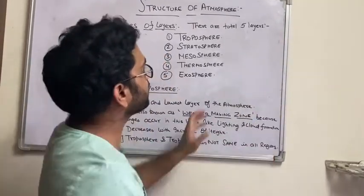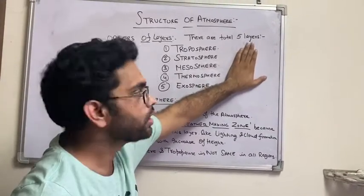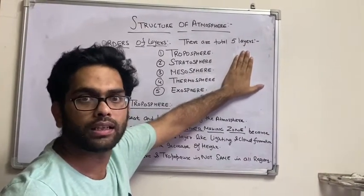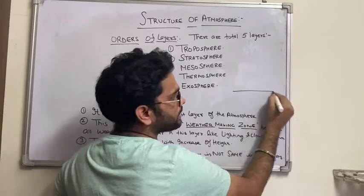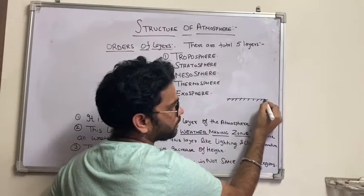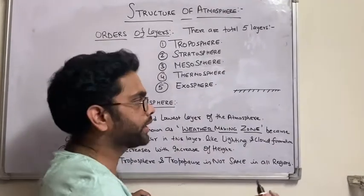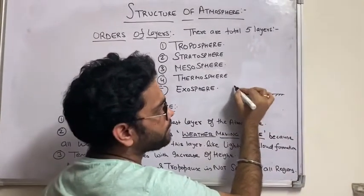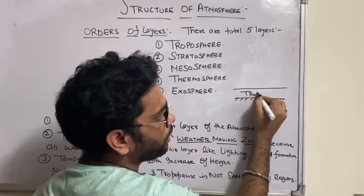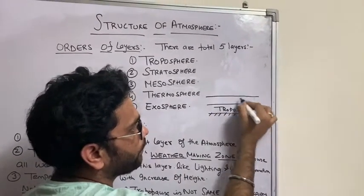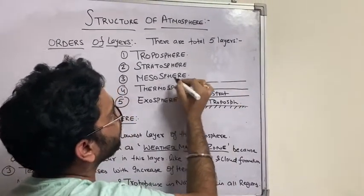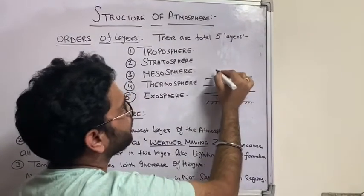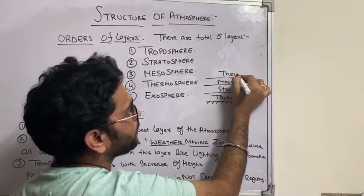Now let us study the layers of the atmosphere. We have divided the atmosphere into five layers. The first layer is the troposphere, then above it is the stratosphere. Going further up, we have the mesosphere, and then higher layers above that.